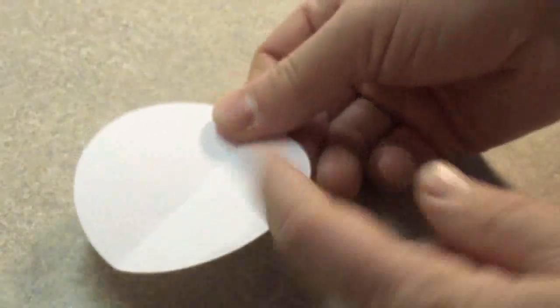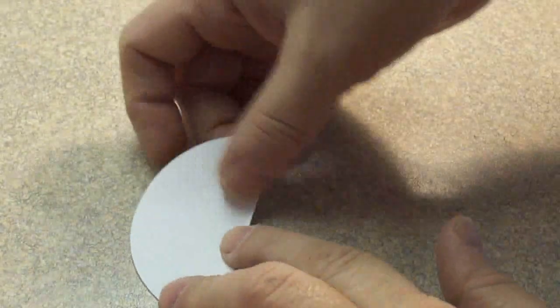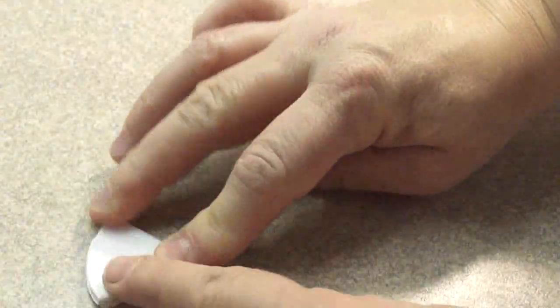Cut out the circle, fold it in half and then fold it into thirds. Take your time doing this and make sure you crease the paper very well. So in half and then in thirds.